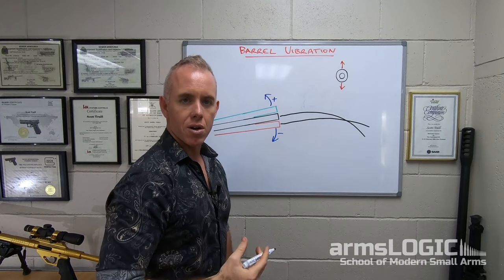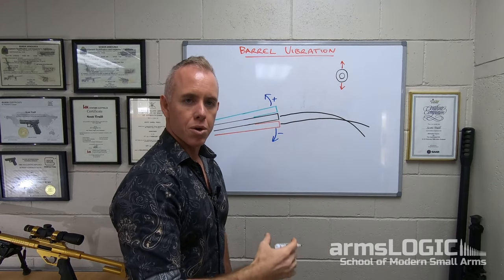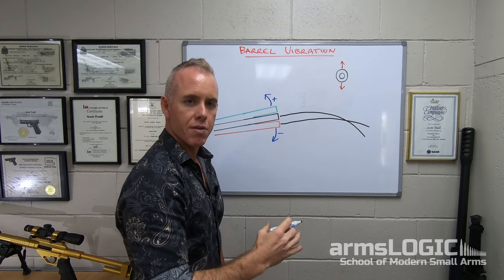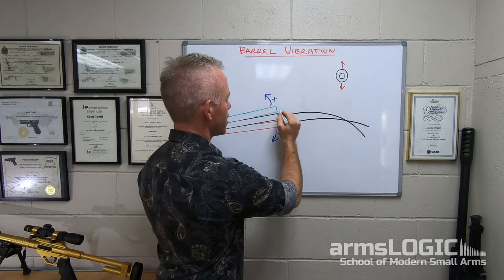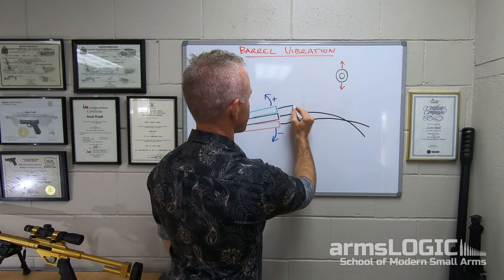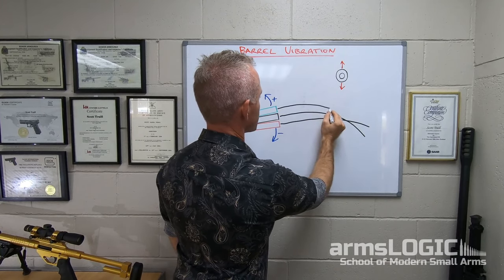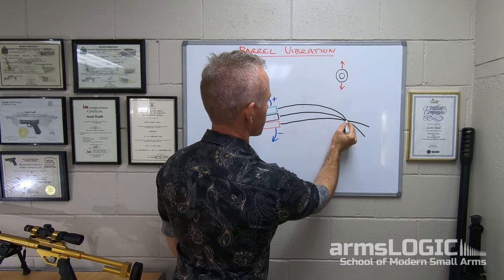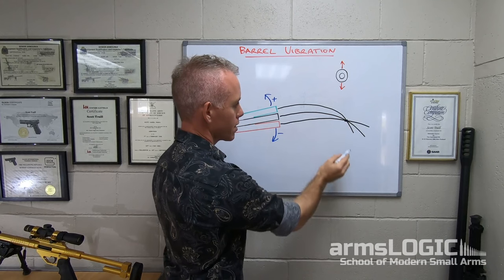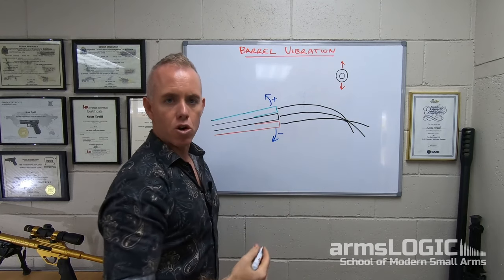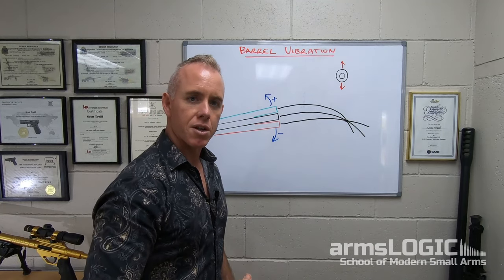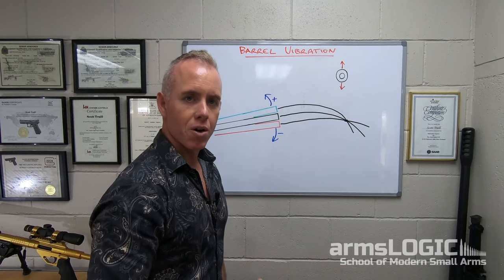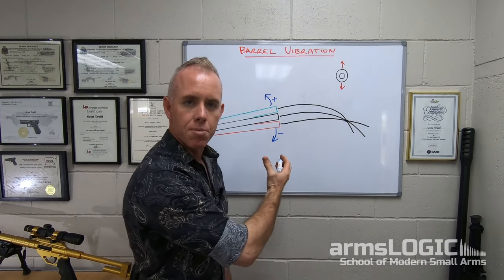A projectile of lower velocity would exit the muzzle later, but because of its lower speed it would have a more curved trajectory — more like this — and it would intersect the first two trajectories here. This is known as the compensating point, and it's found at the range at which the weapon is most accurate, which may not always be closer to the muzzle.